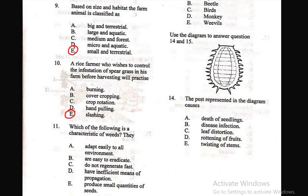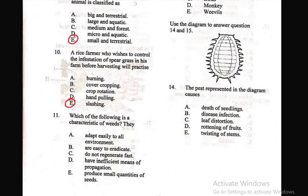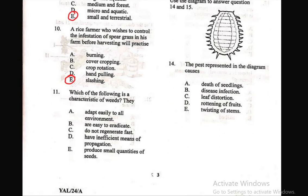Question 11: Which of the following is a characteristic of weeds? They — A) adapt easily to all environments, B) are easy to eradicate, C) do not regenerate fast, D) have inefficient means of propagation, E) produce more quantities of seeds. The right answer is A — weeds adapt easily to all environments.